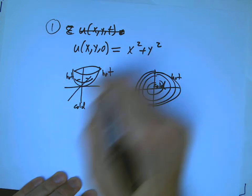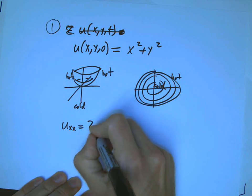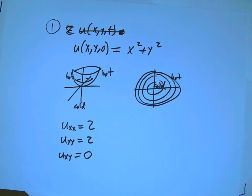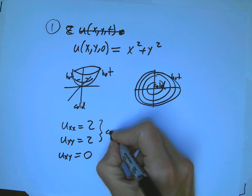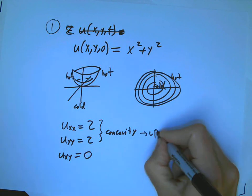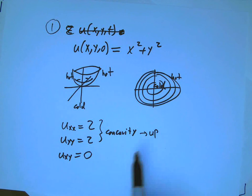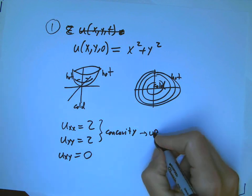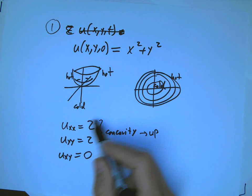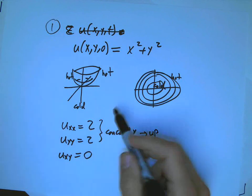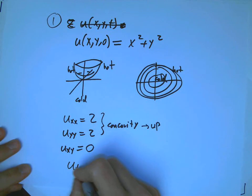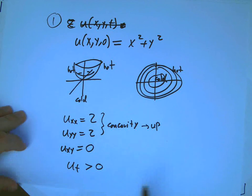So let's look at the second partials with respect to space here. Uxx is 2, easy calculation. Uyy is 2. The mixed partial happens to be 0. And remember that these guys measure the concavity. Both of those are indicating that in the x direction and the y direction, that it's concave up. That's suggesting that we're at a minimum. It's definitely suggesting that we've got some curvature upward here, very much like one of the cases we had in the one-dimensional case. And so we notice that certainly our intuition tells us that ut is going to be greater than 0 here.